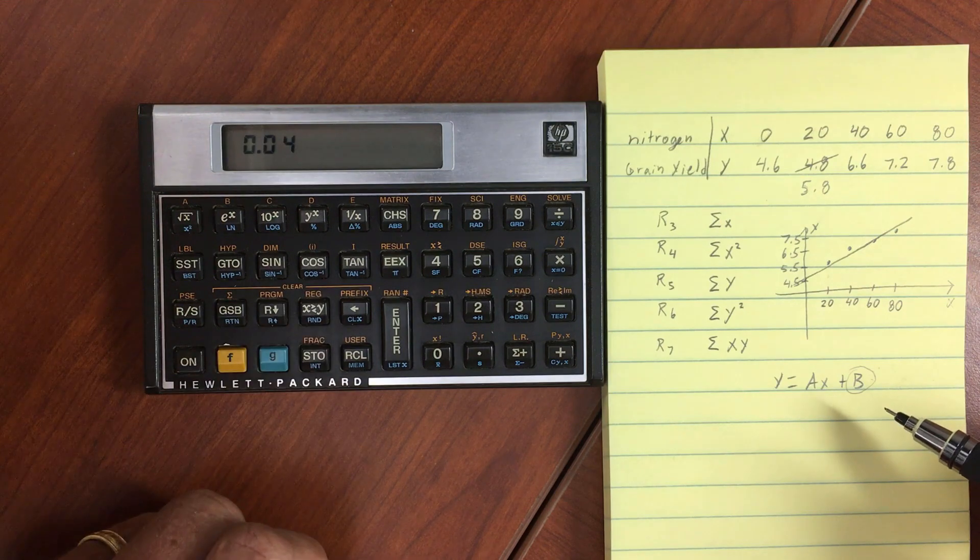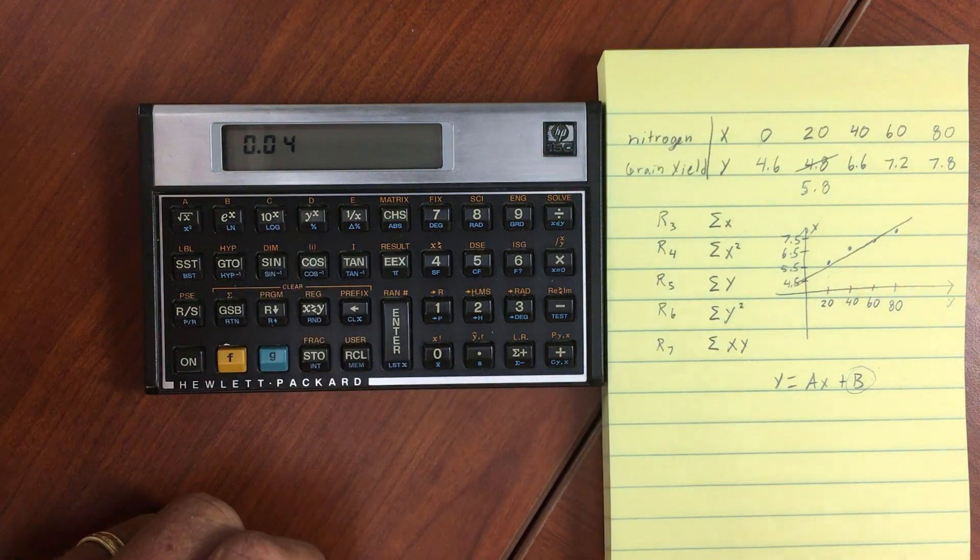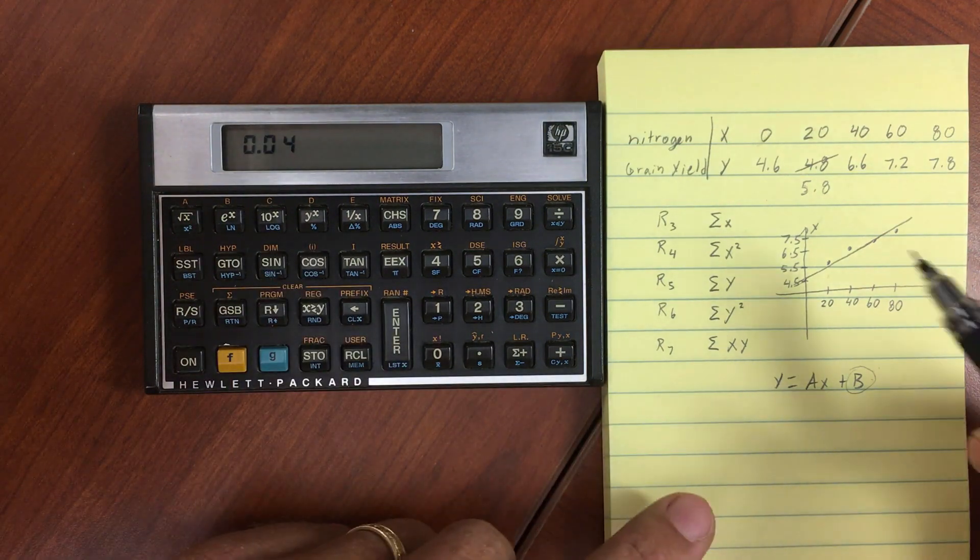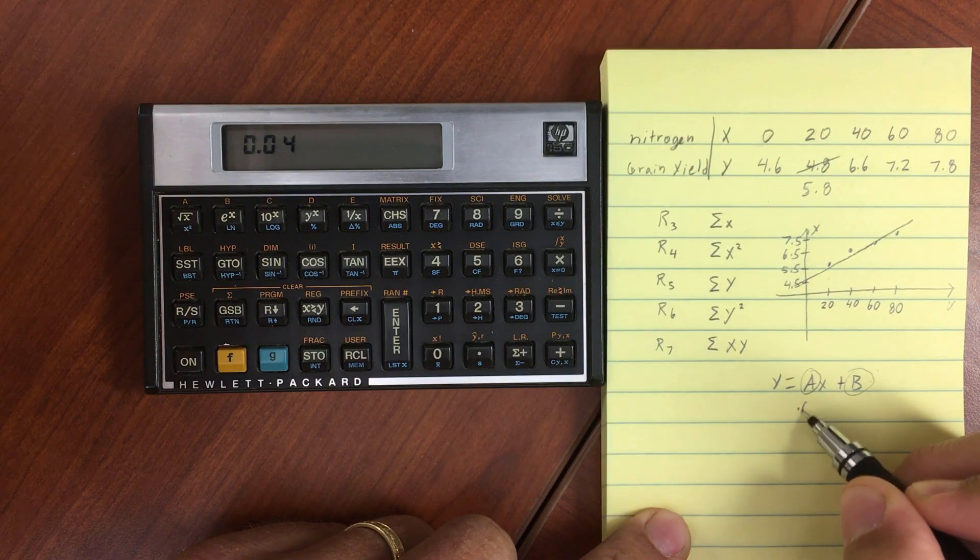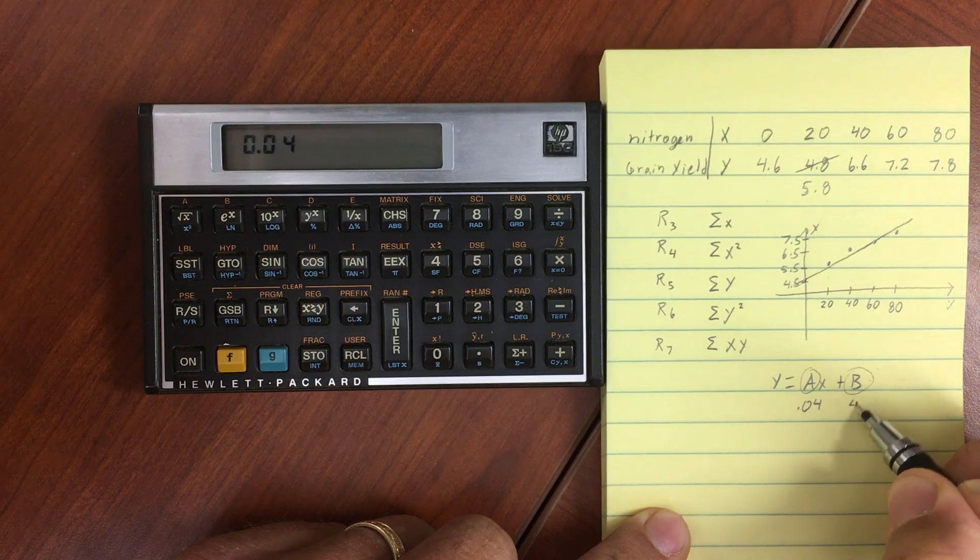If I swap the X and Y registers, that gives me a slope of 0.04. That's the slope of this line here. That will be our A, 0.04 and 4.84.